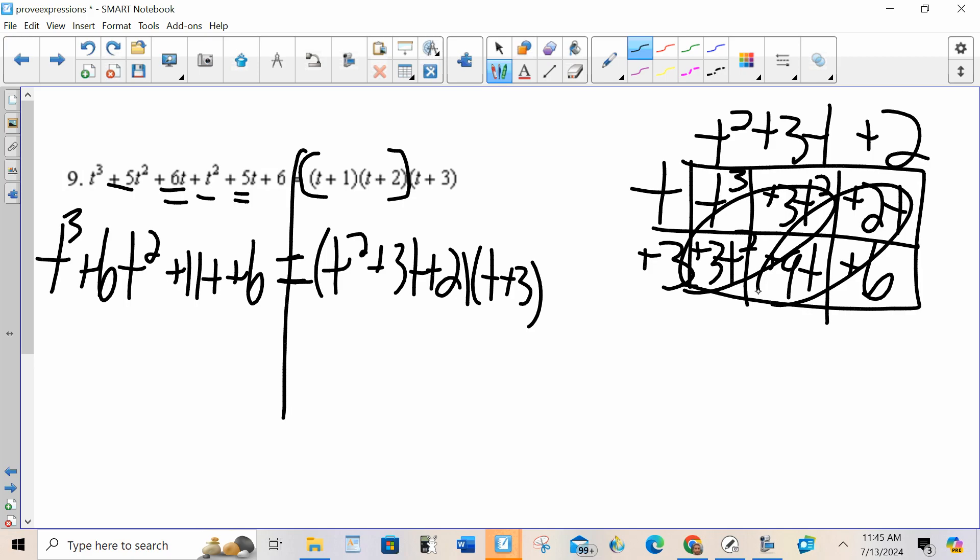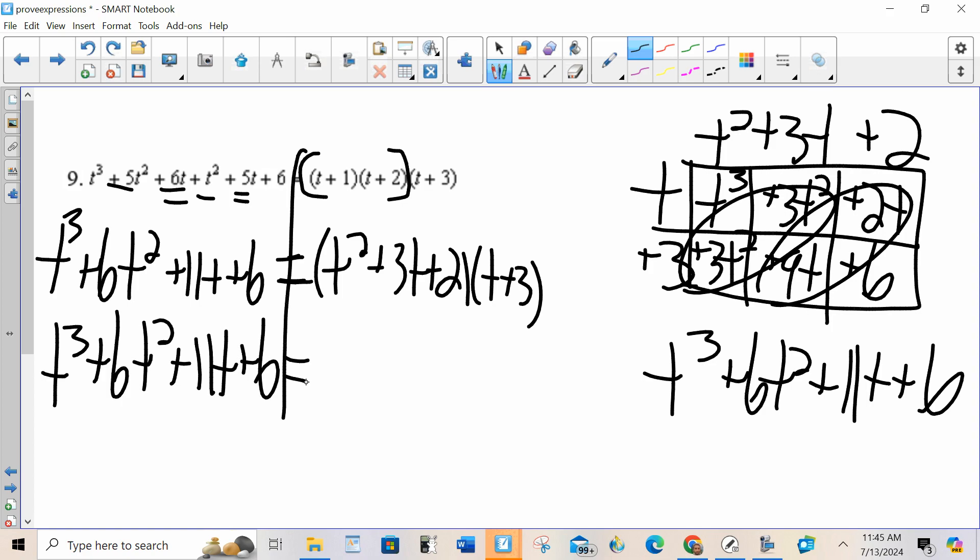I've got t cubed plus 6t squared plus 11t plus 6. So on my left-hand side I have t cubed plus 6t squared plus 11t plus 6. And on my right-hand side t cubed plus 6t squared plus 11t plus 6. They match. That's it.